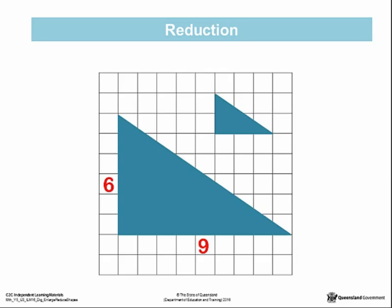The dimensions of the new triangle are 3 squares along the base and 2 squares along the height. Each dimension of the original shape has been divided by 3 to get the dimensions for the new shape.